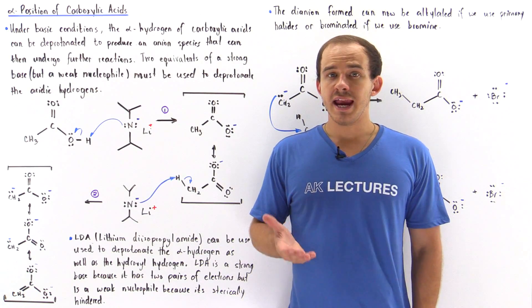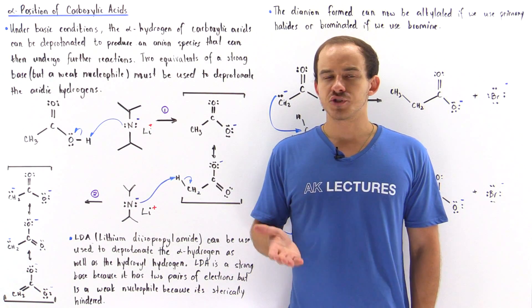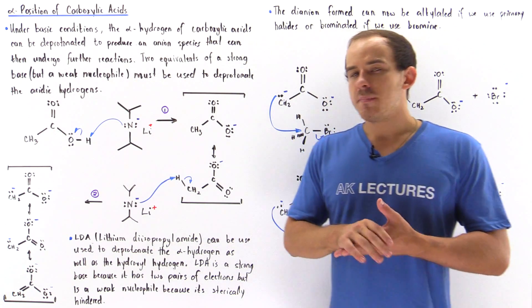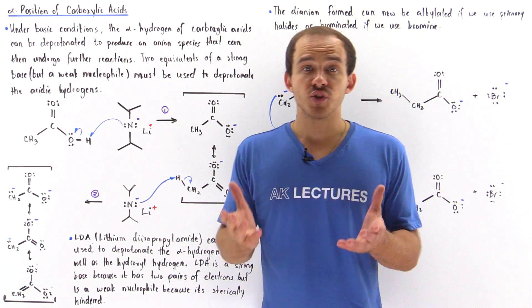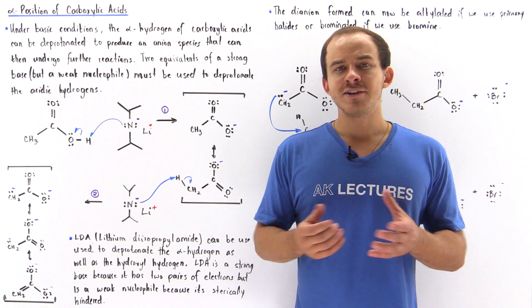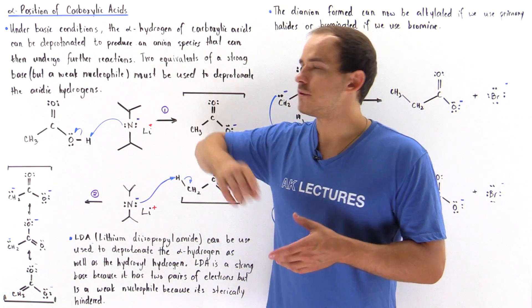Carbonyl compounds contain acidic hydrogens attached to the alpha position, to the alpha carbon. Now because carboxylic acids also contain the carbonyl group, they also contain acidic hydrogens attached to the alpha position.